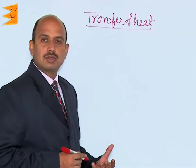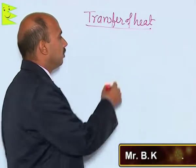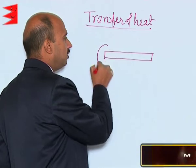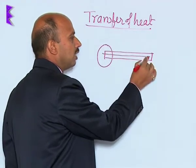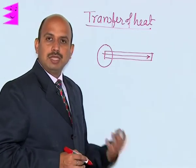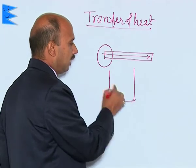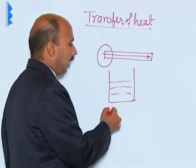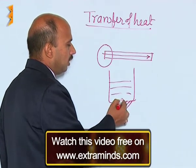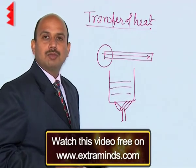Now, we can see a transfer of heat. When a body is heated — suppose you have taken a rod and you are heating one end — heat is slowly transferred to the other end. Similarly, if you have taken water in a beaker and heat it using a stove or gas flame, the whole water slowly gets heated up. We also get heat from the sun.